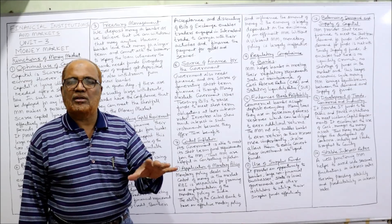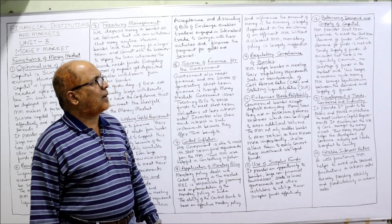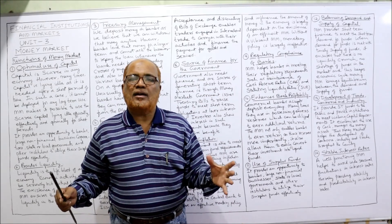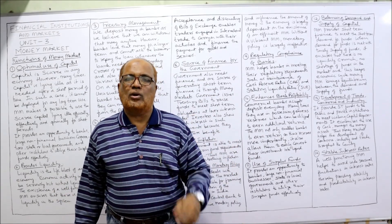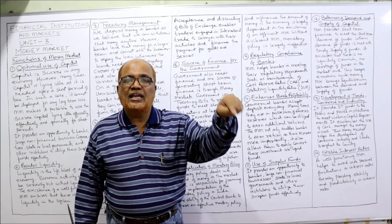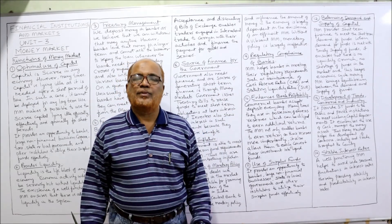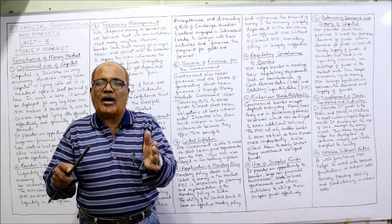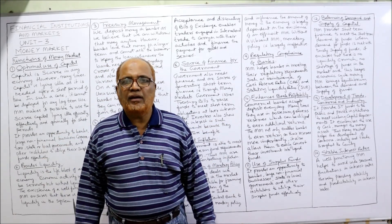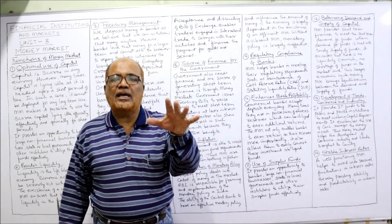The twelfth function is balancing the demand and supply of capital. In any market there is demand and supply, and this applies to capital as well — some people have surplus money while others are in need of it. With the help of the money market, the demand and supply of capital will be brought into equilibrium.